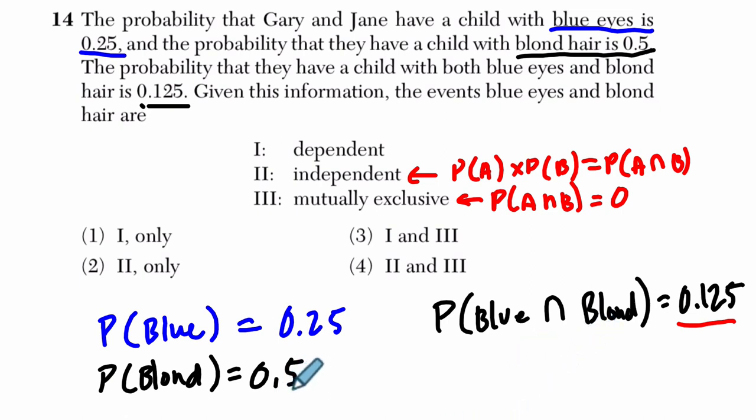Furthermore, if we multiply 0.5 times 0.25, a half, the probability of having blonde hair, times a fourth, probability of having blue eyes, is one-eighth. And one-eighth does equal 0.125. Therefore, they are independent. That's choice two right here.